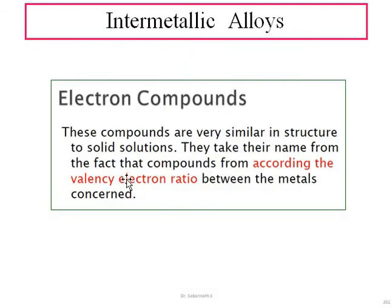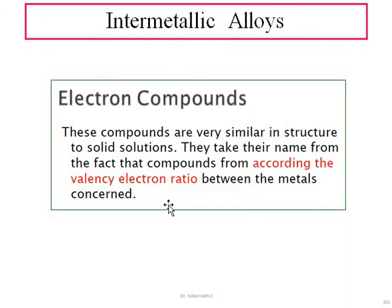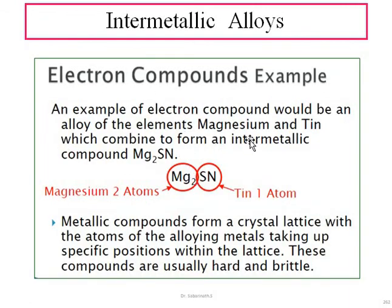The first sub-classification is electron compounds. As the name suggests, these compounds have an electron-sharing tendency, similar to covalent bonding. Their structure depends on the valence electron ratio between the metals. For example, an alloy formed from magnesium (two atoms) and tin (one atom) involves electron sharing and is classified as an electron compound. These compounds are typically very hard and brittle.